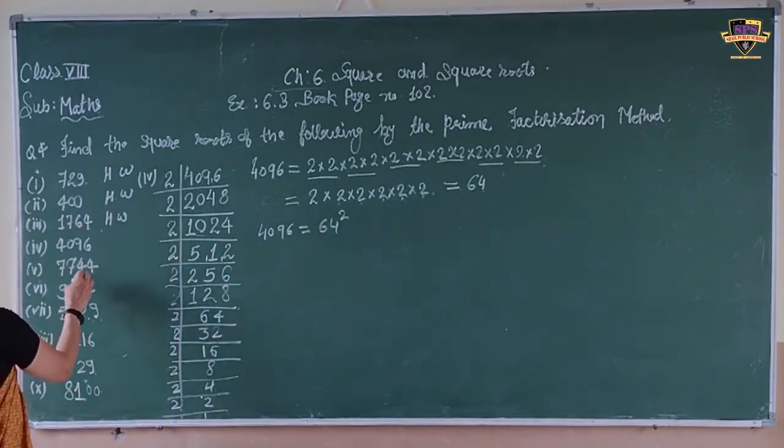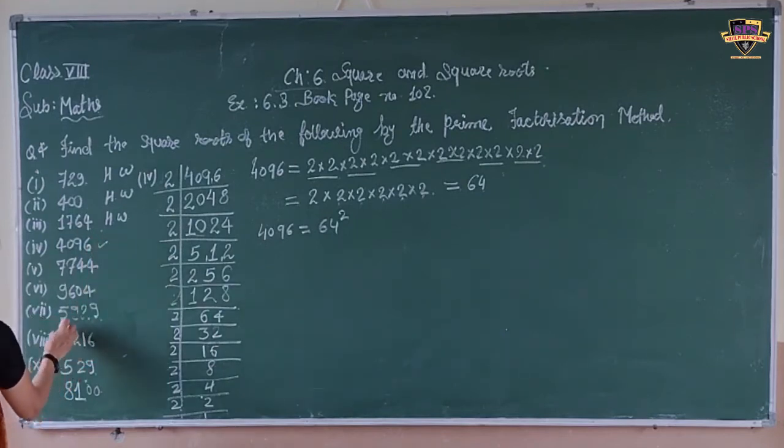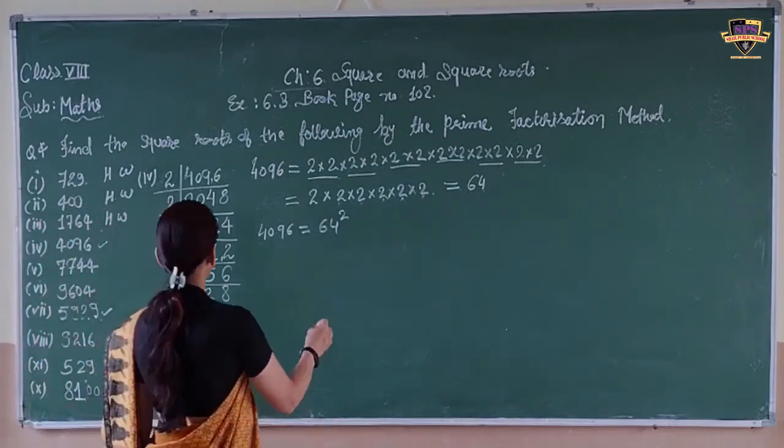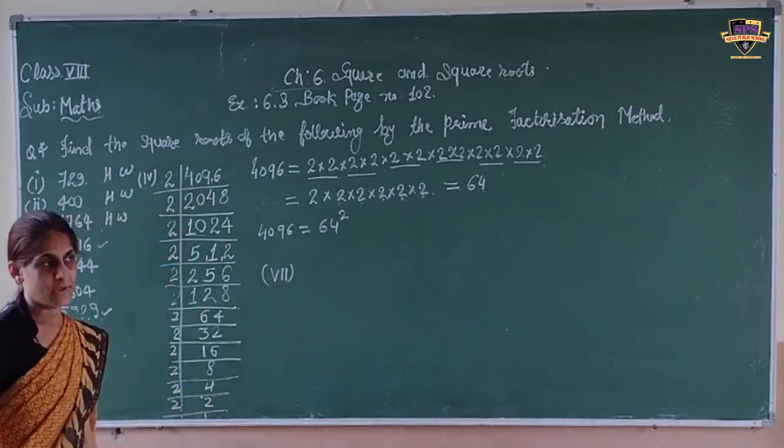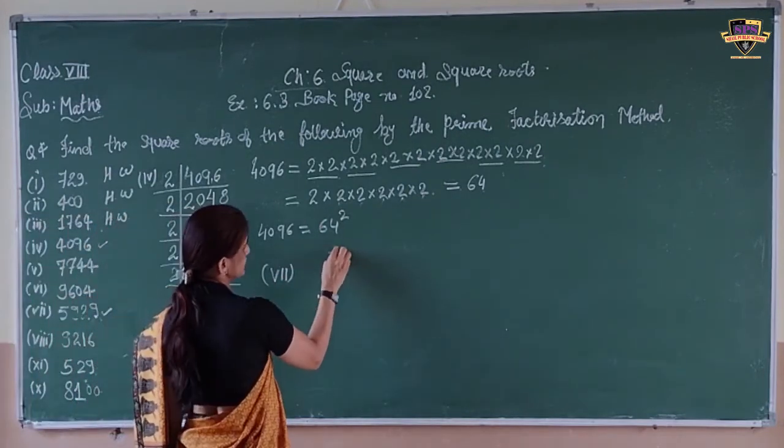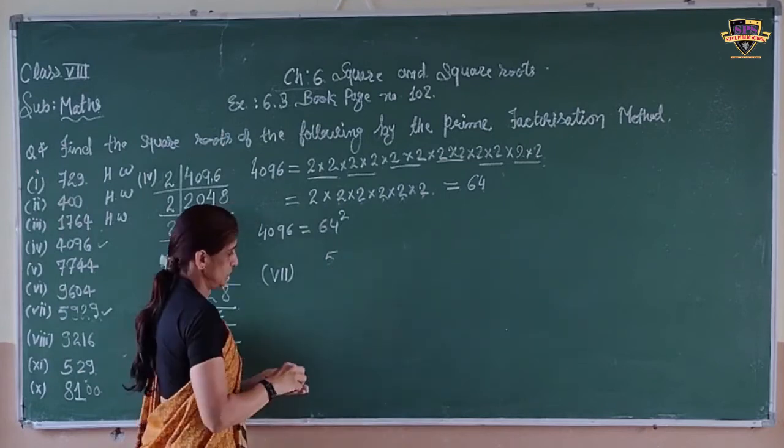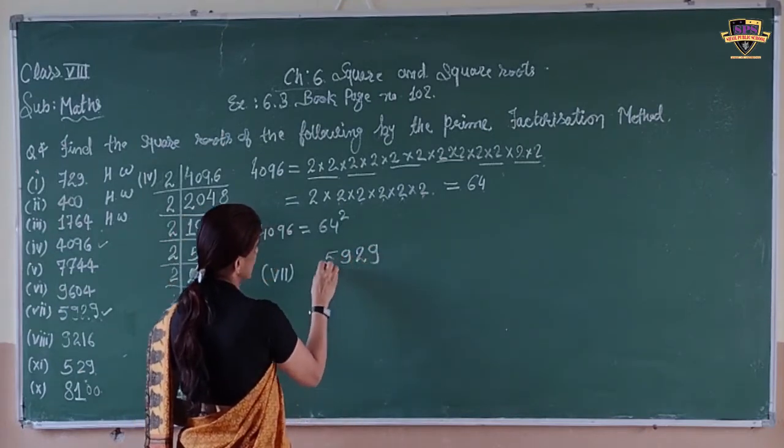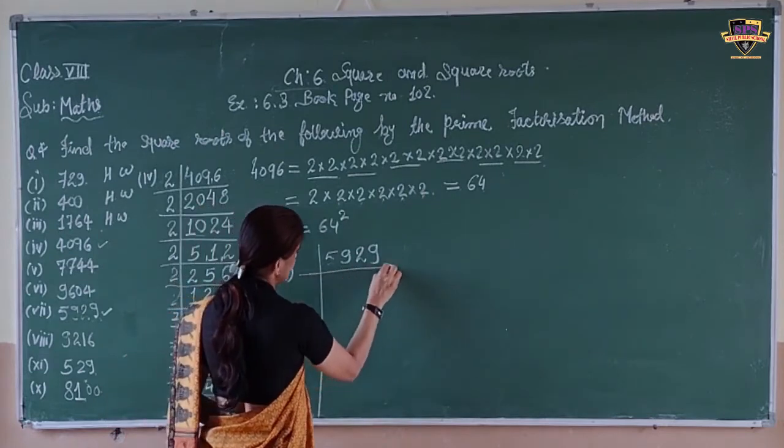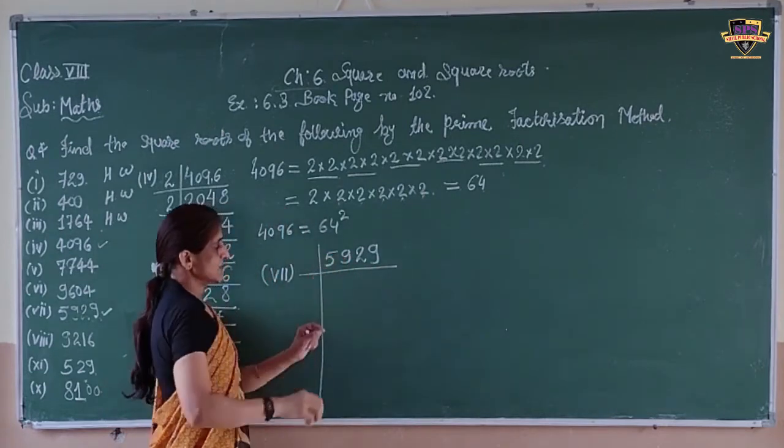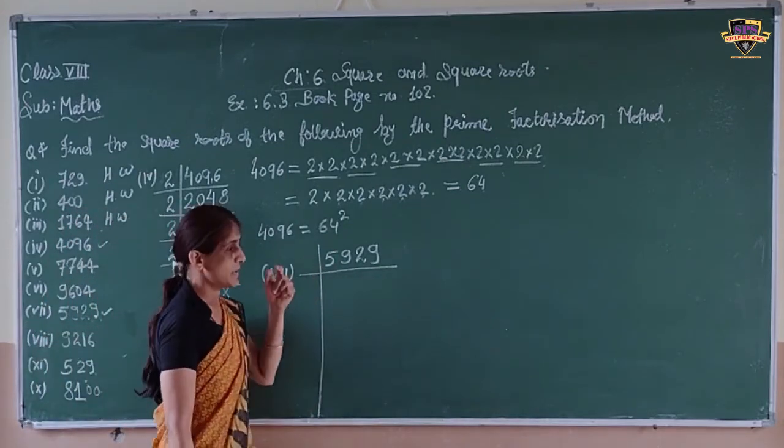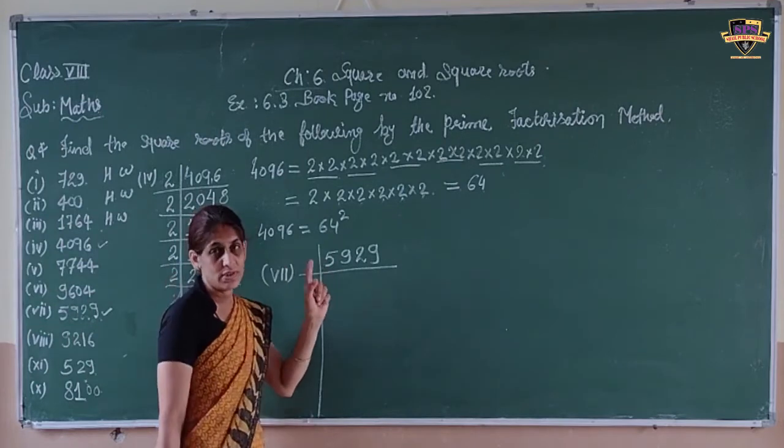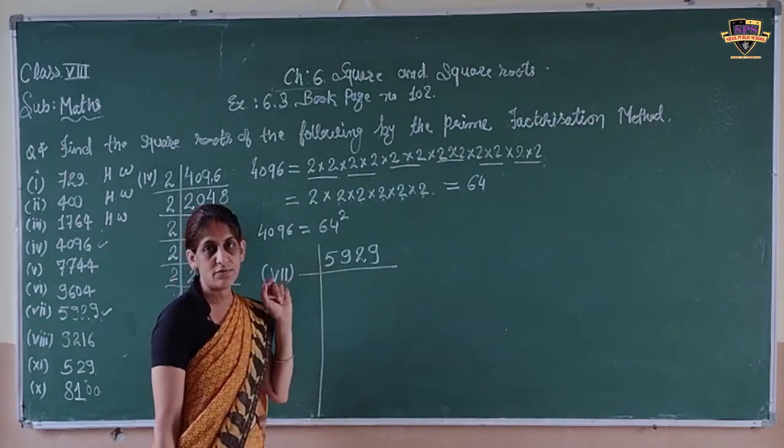Now take another example. We have completed this. Now take an odd number: 5929. Our question number 7 is 5929. So again, divide this. You can see your last digit is 9. So this number is odd. Odd numbers always cannot be divided by 2.